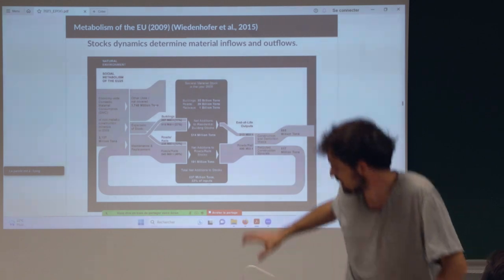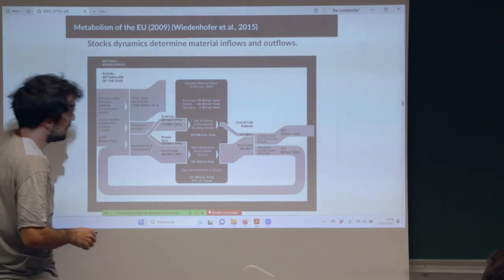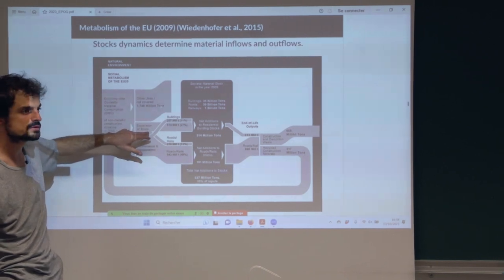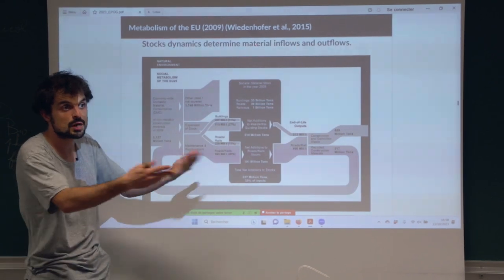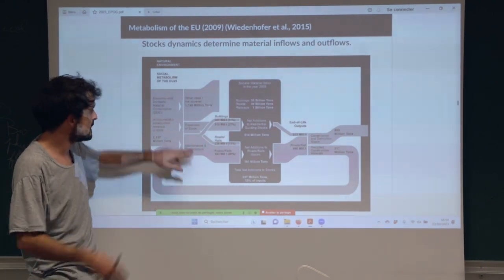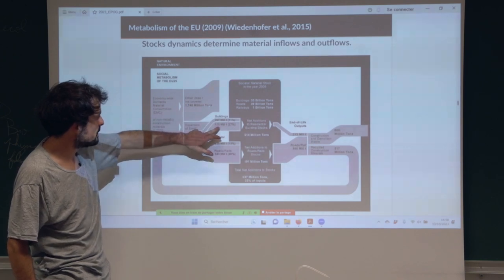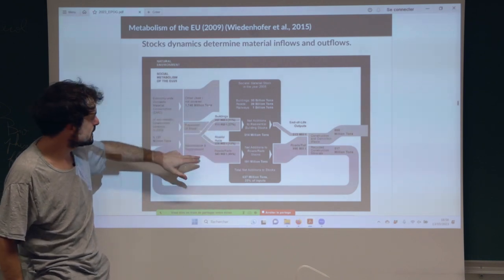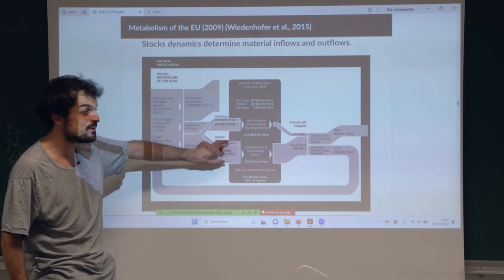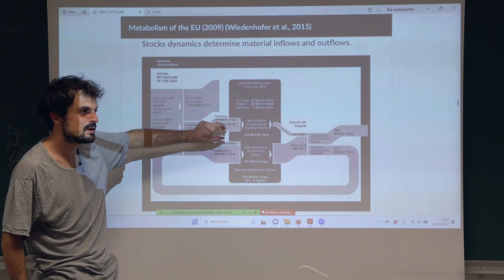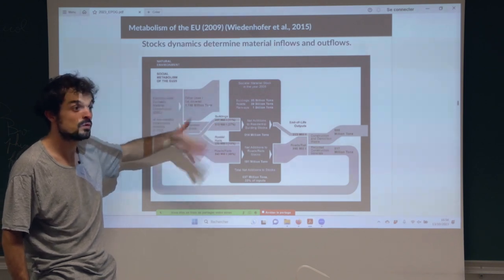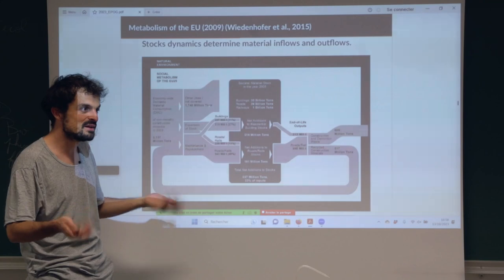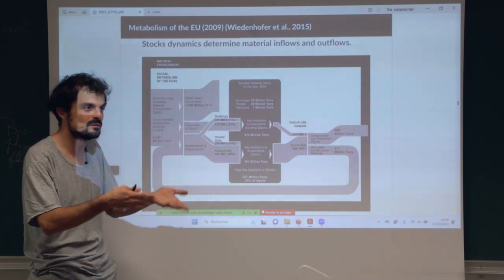This graph puts stocks at the center of the study and looks at flows representing an expansion of those stocks — construction of new roads, a new airport, a new building. But what is important is that the flow for maintenance and replacement is way, way bigger than the flow for new stocks. It means that we extract sand and gravel primarily to repair roads today — we open new quarries mainly for that. The main physical activity in the EU is not to construct new buildings but to repair roads.